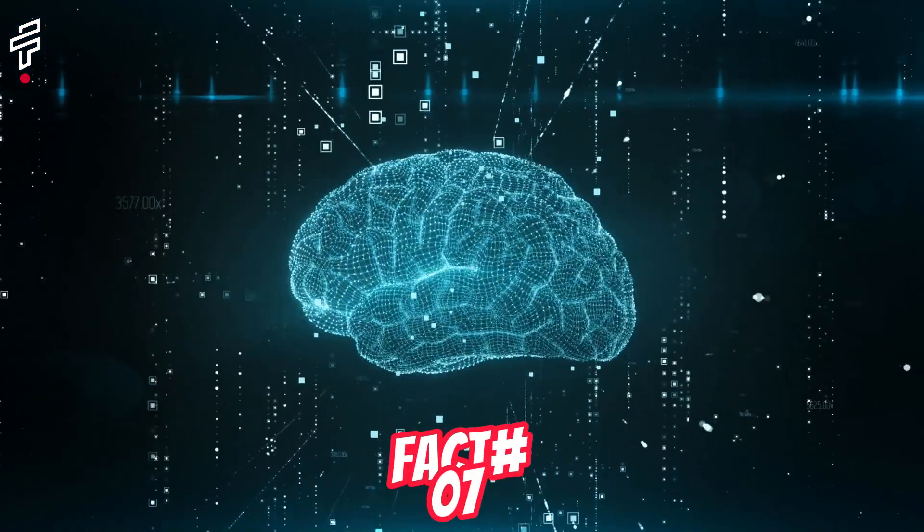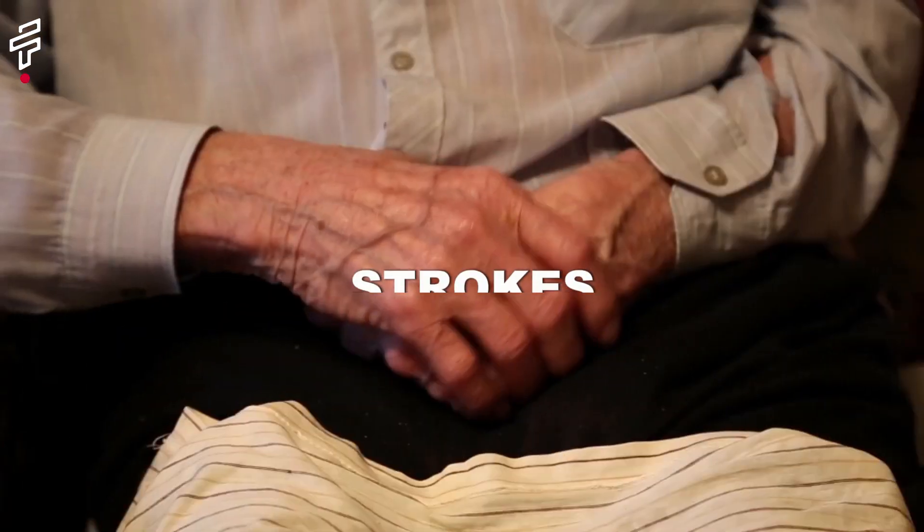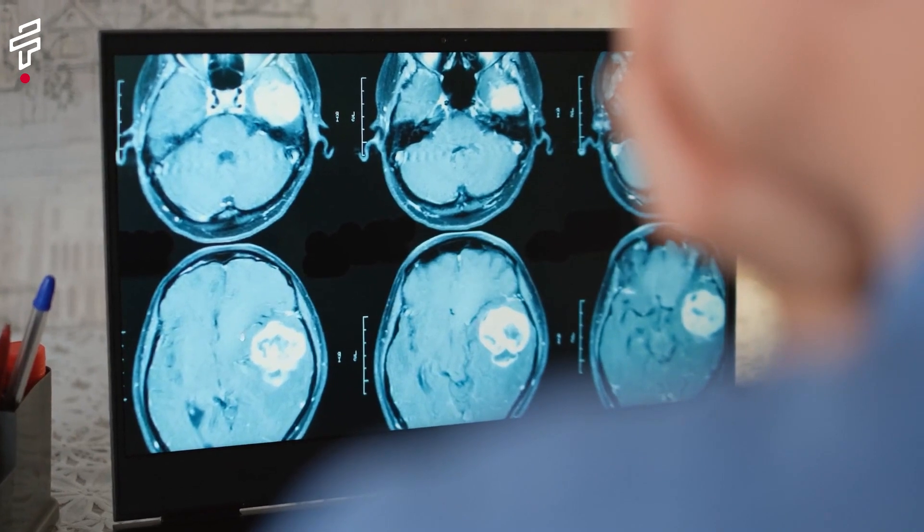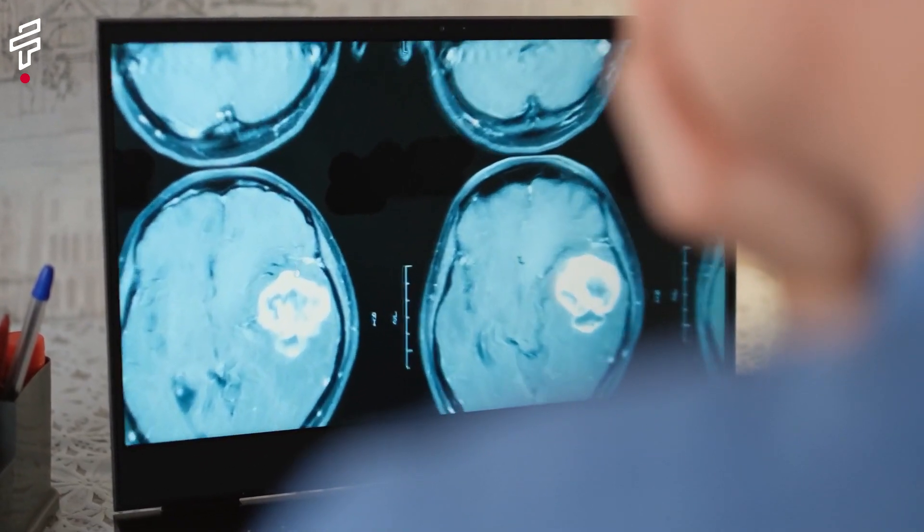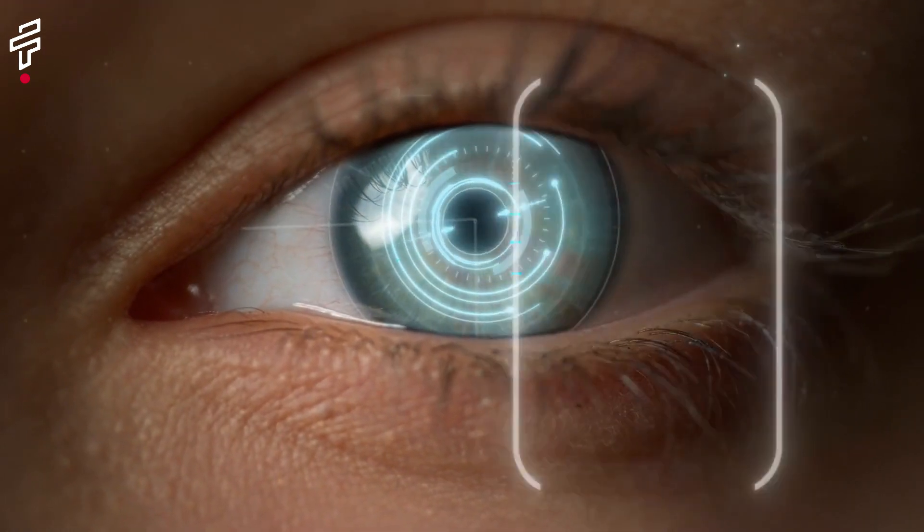Fact number seven, the brain is vulnerable to injury and disease. Head injuries, strokes and brain tumors can cause damage to the brain and lead to a variety of problems, including paralysis, loss of speech and memory loss.